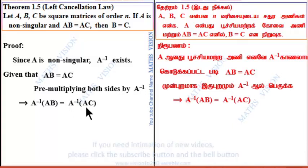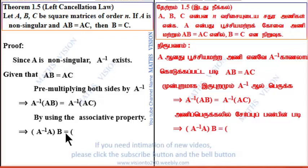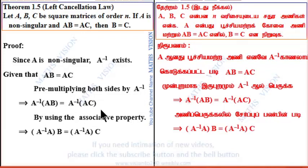Matrix multiplication is always associative, so this equals A inverse into A into B equals A inverse into A into C.